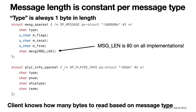The player info message is message type number two, so the type will be number two. We have the type of message (always two for this message), the player number, the ship type, and the team — each is one byte. So this message is four bytes. When reading messages, if you read a two as the first byte, your client knows the message is four bytes long. If the first byte is one, you know the message is 84 bytes long, so you read 84 bytes before the Nettrek packet is complete.